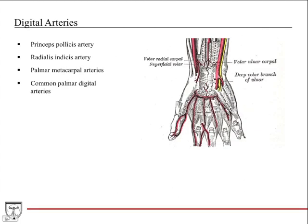For the digital arteries, there are a few you want to be aware of: the princeps pollicis artery, the radialis indicis artery — both terminal branches of the radial artery — and then the palmar metacarpal arteries and the common palmar digital arteries. We'll go through those now.